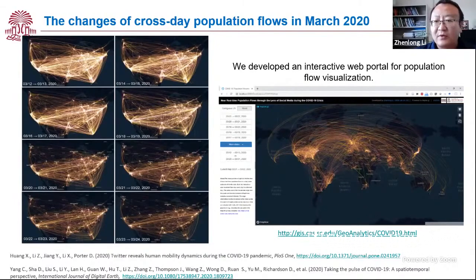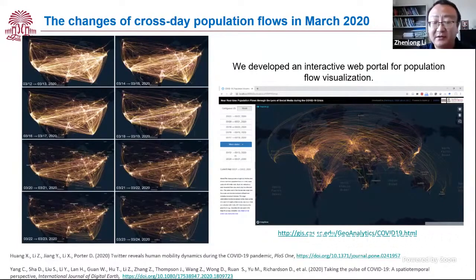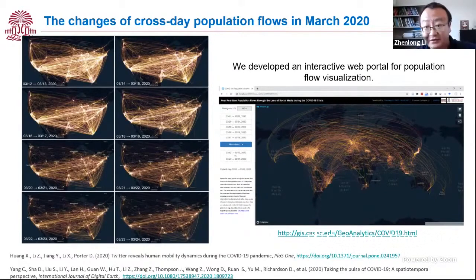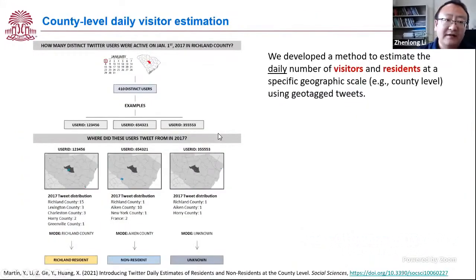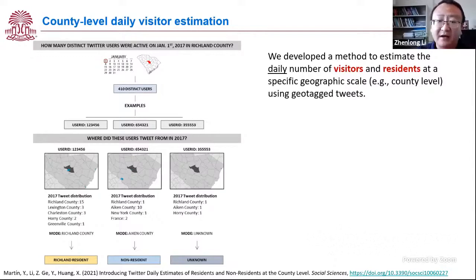We developed an interactive web portal for visualizing this data — the link has been shared with you. The portal is still available; you can click on a date and zoom in and out of the map to see how it looks. Additionally, we developed a method to estimate the daily number of visitors and residents at a specific geographic level, for example the county.